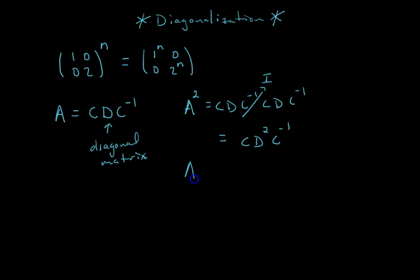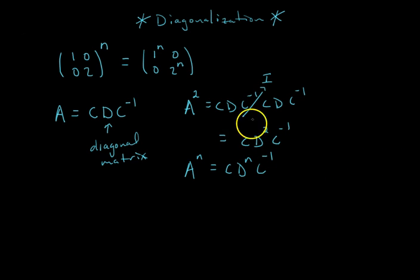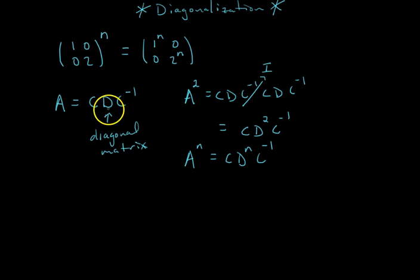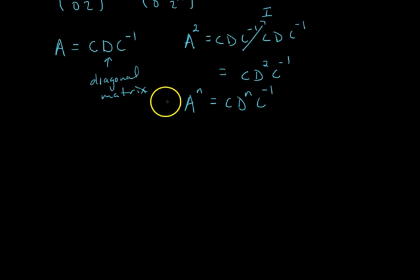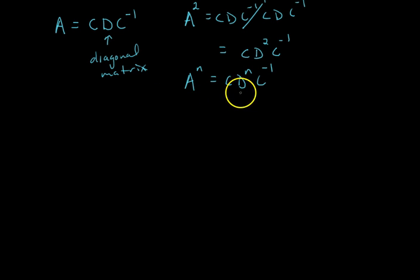You can do the same for any arbitrary power, so Aⁿ = CDⁿC⁻¹, because you'll have a big chain of CDC⁻¹ and all those C⁻¹C terms cancel to the identity. Remember, D is a diagonal matrix, so Dⁿ is easy — you just distribute the power to the entries on the main diagonal. So here's the game plan: what are the matrices C, D, and C⁻¹, and how do you get them?